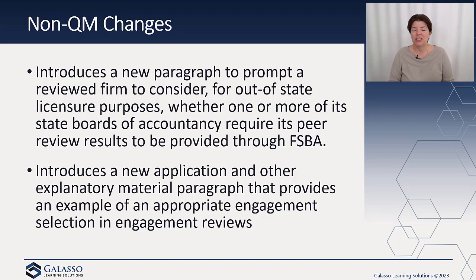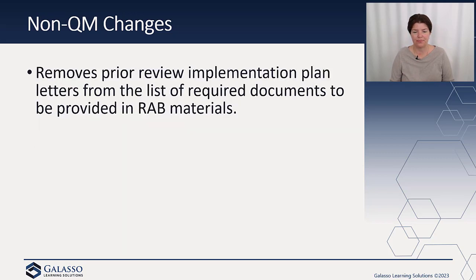It also introduces a new application and other explanatory material paragraph that provides an example of an appropriate engagement selection in engagement reviews. And then it removes prior review implementation plan letters from the list of required documents to be provided in the RAB materials.